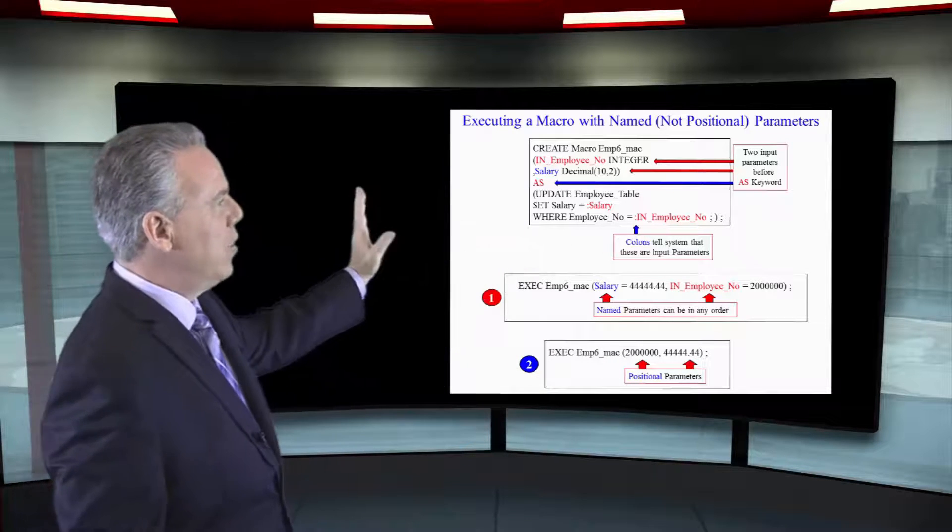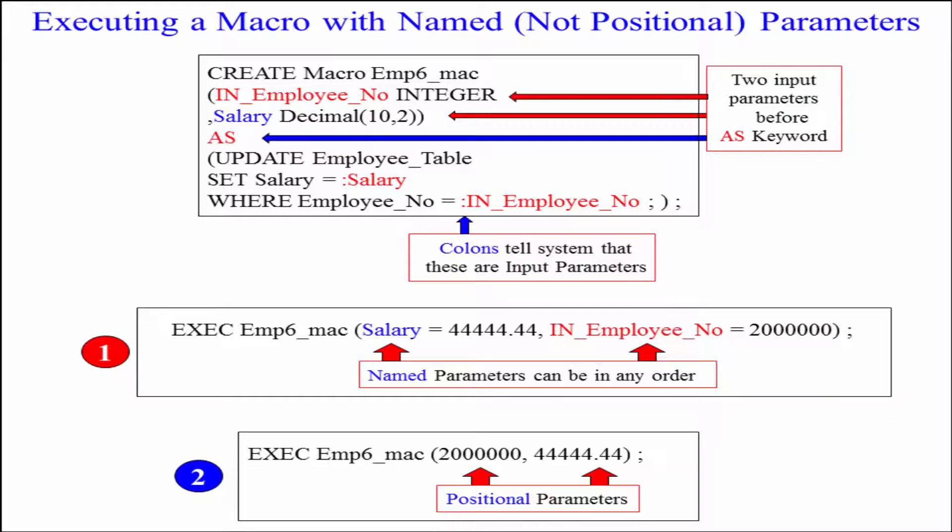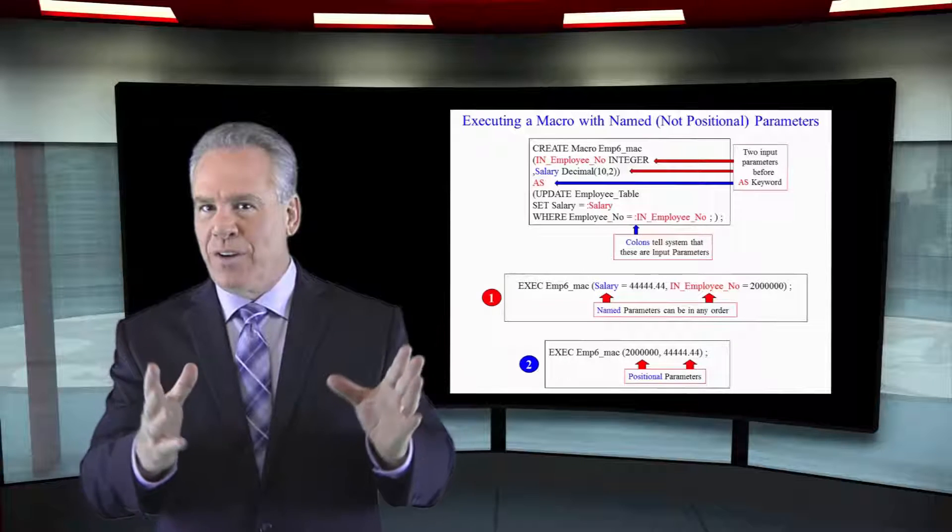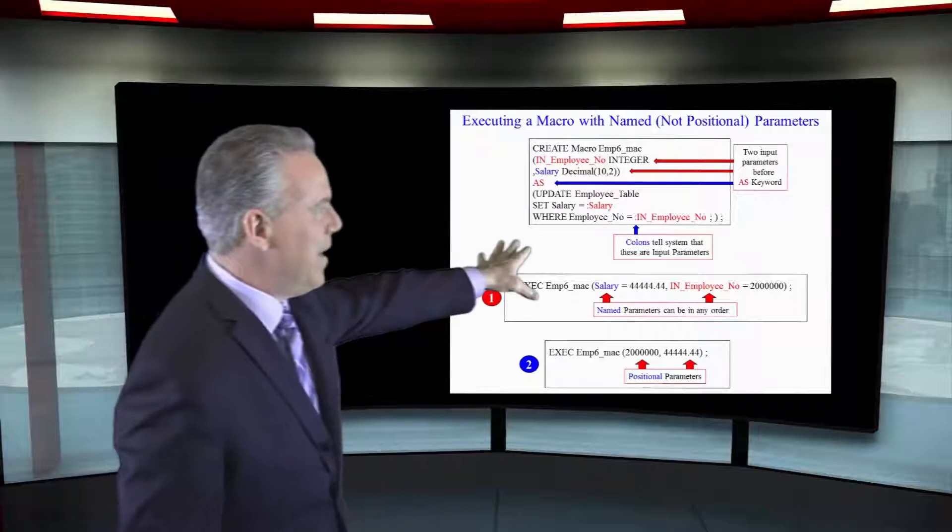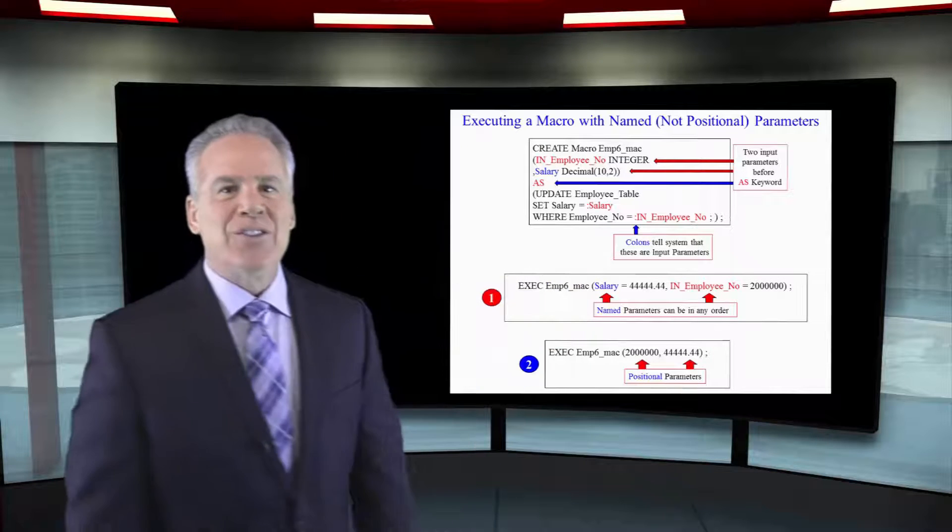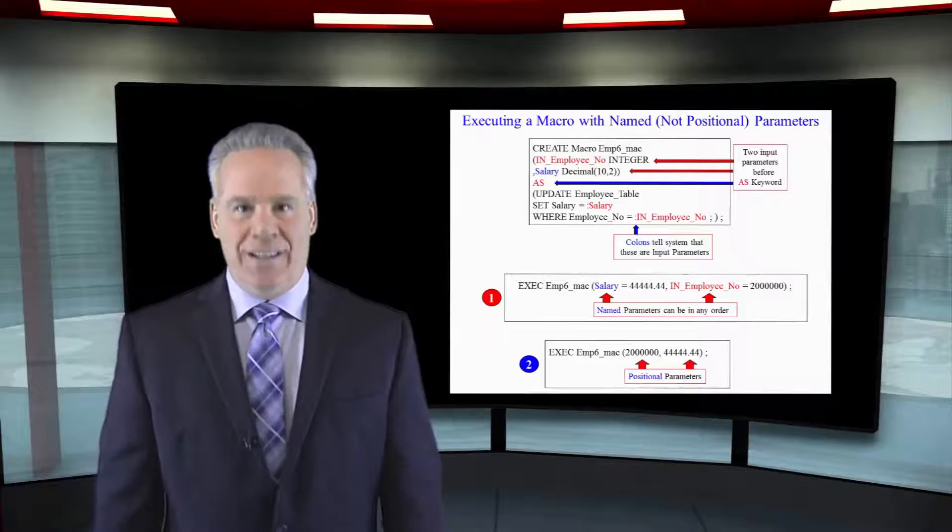We create the macro and give it a name. We do not mention the word AS yet because we've got input parameters. You can see with my red arrows up here that I've got two parameters IN_Employee_No and Salary and we give them their data types and close everything up and then the blue arrow really points out the keyword AS here.